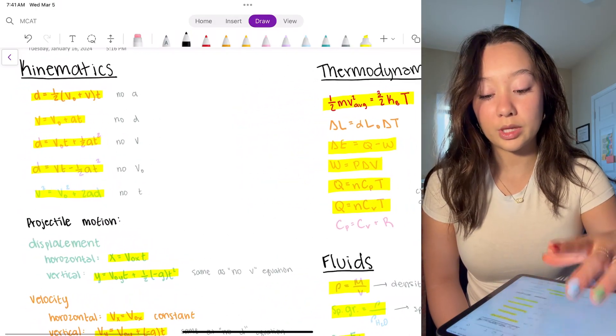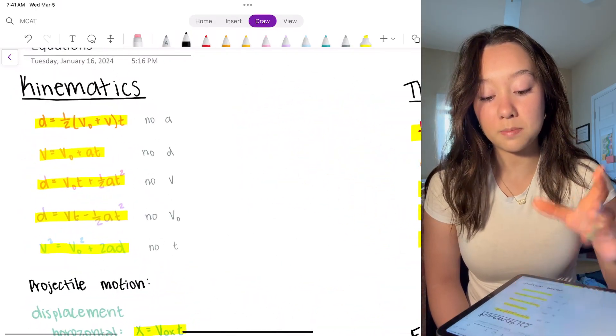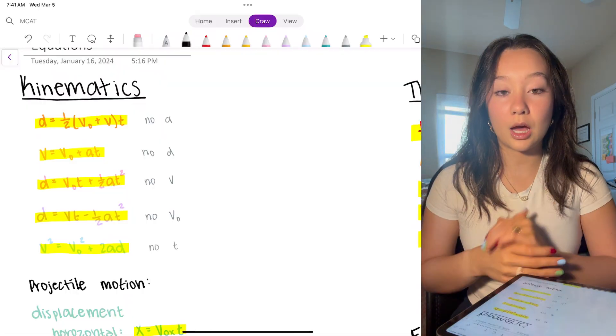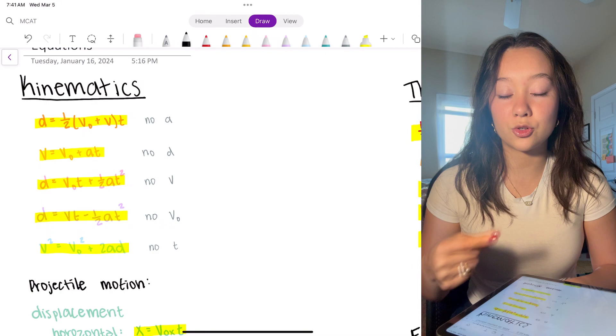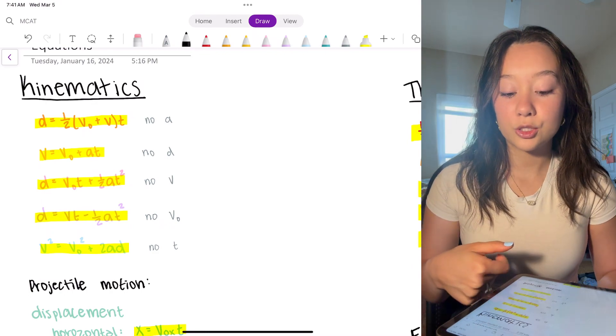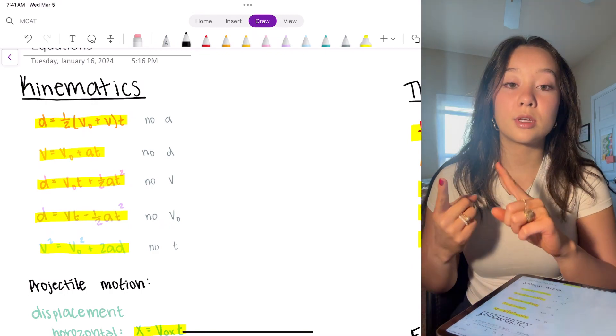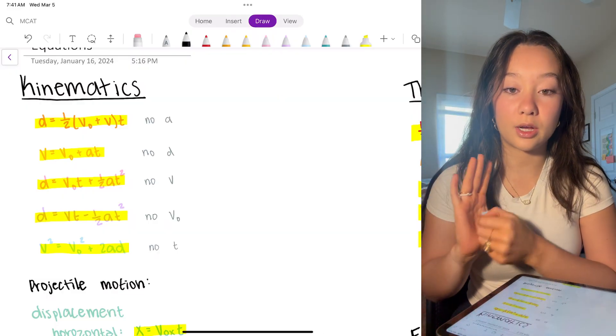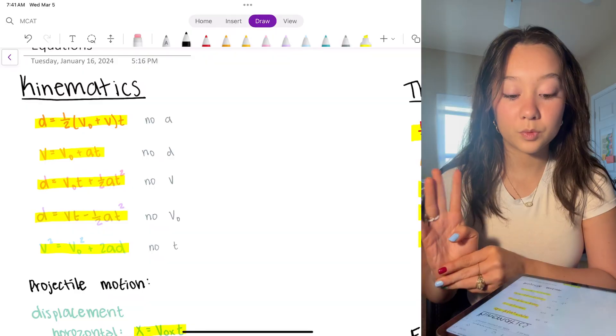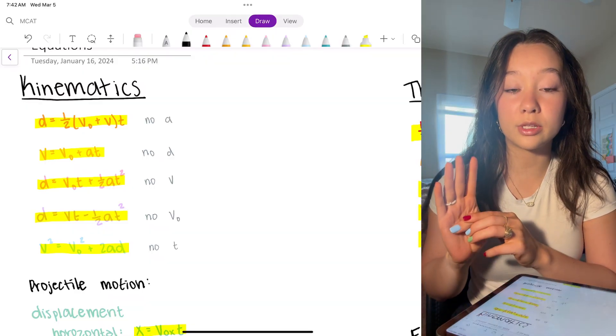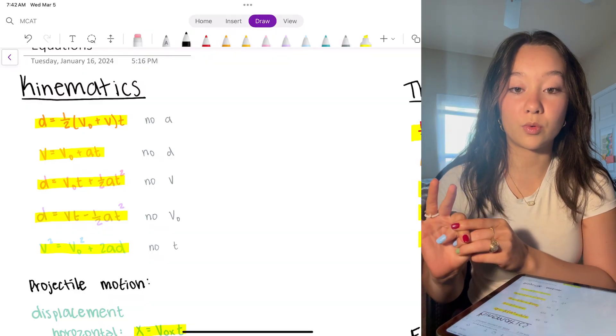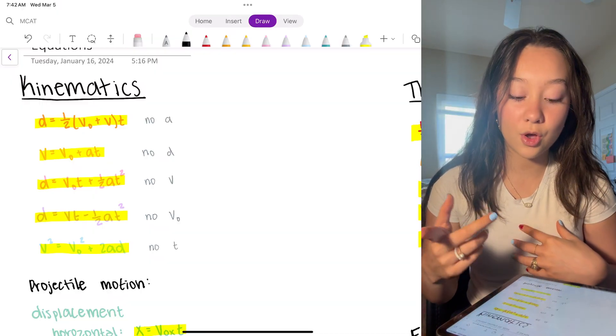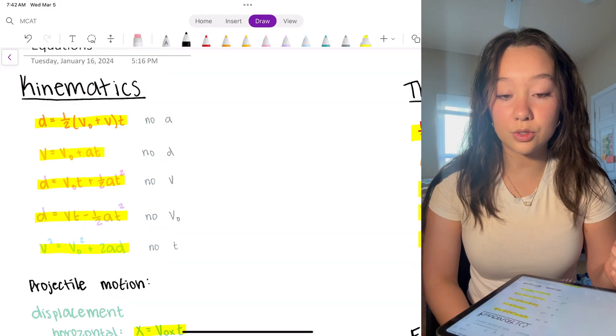So first we start off here with kinematics. Now these are the big five kinematics equations that you're going to need to know. And the way that I memorize them is that each one is missing something. So when you write out all your variables - initial velocity, final velocity, distance, time, acceleration - each one of these equations is not going to have one of these. So usually when you're solving an equation you won't have one of these given and you're trying to solve for one of these, so you're only going to have three. So you need to be able to decipher which one of these equations you're going to use. These are very helpful to memorize.